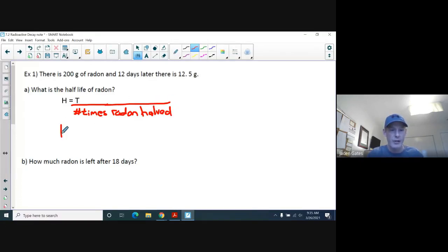Now, here's the thing is, H equals, well, I know how much time went by. Here it is right here, 12 days. Now, the key is, how many times did it halve? I had 200, and now I have 12.5 grams. Well, here's what we do.